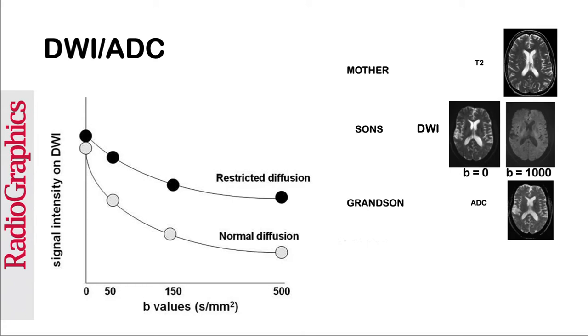How do we make the ADC images? Let us look at this graph. We notice that both tissues, whether restricted diffusion or normal diffusion, exhibit a gradual loss of signal with greater degree of the B value. However, when we compare the two, tissues with restricted diffusion exhibit relatively less loss of signal compared to normal tissue.